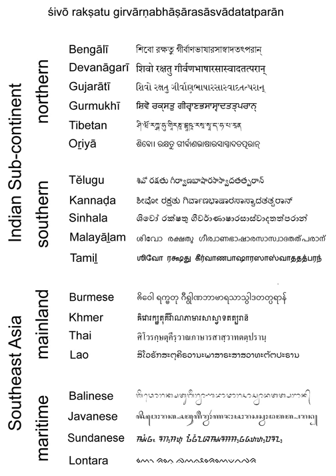Abugidas include the extensive Brahmic family of scripts of South and Southeast Asia, Semitic Ethiopic scripts, and Canadian Aboriginal syllabics. As is the case for syllabaries, the units of the writing system may consist of the representations both of syllables and of consonants. For scripts of the Brahmic family, the term akshara is used for the units. The term abugida in linguistics was proposed by Peter T. Daniels in his 1990 Typology of Writing Systems.